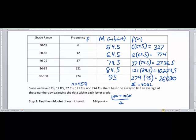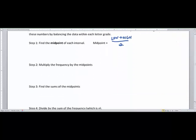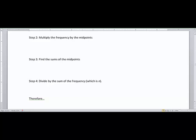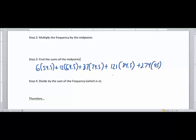Once I am given that total, I'm going to divide that sum by the frequency, which is my sample size N. So to review what we did in step three, you took your 6 times 54.5, you added your 12 times 64.5, plus your 37 times 74.5, plus your 121 times 84.5, and then your 274, which is multiplied by 95, and that gave you a total of 40,112.